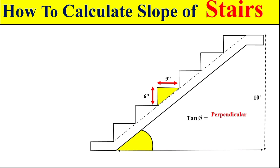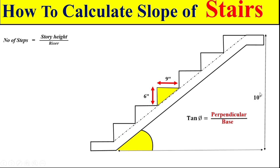Using the tangent approach, we take the total perpendicular of the stair divided by the total clear span, which is called the base. For the base calculation, first we calculate the total number of steps by taking the total story height of 10 feet, multiplying by 12 to convert into inches, then dividing by the riser size of 6 inches. So the total number of steps is 20.